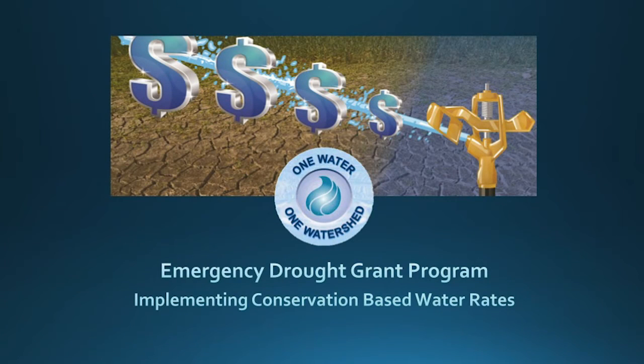What the emergency drought program does is it brings together almost all the tools a water district or a city would need to implement conservation-based rates, which science and economists tell us is the one way that we can really drive conservation in a way that's fair and equitable. It has a sustainable revenue stream for the water district because we want healthy water districts and happy rate payers, and it accomplishes both.